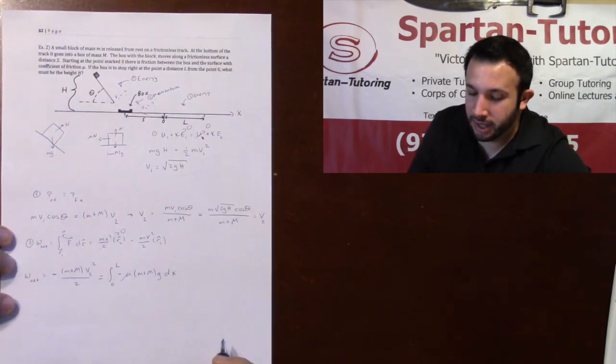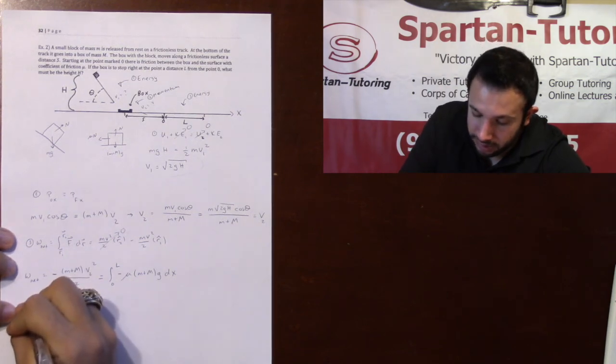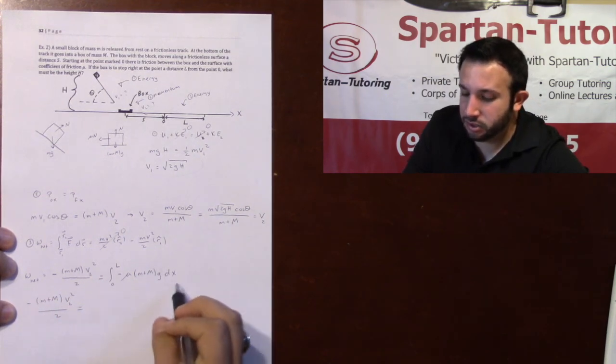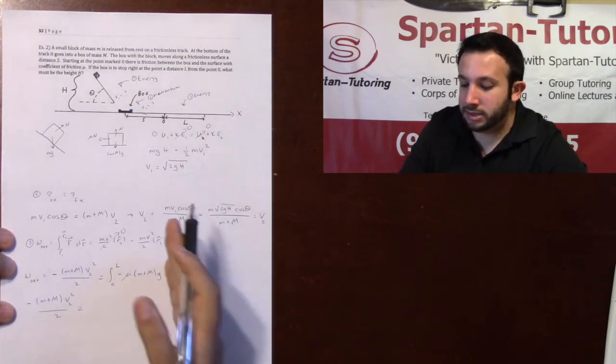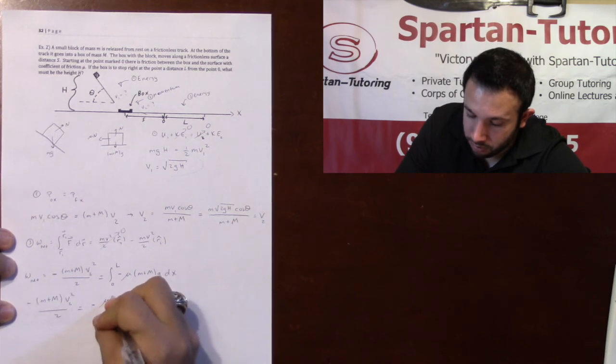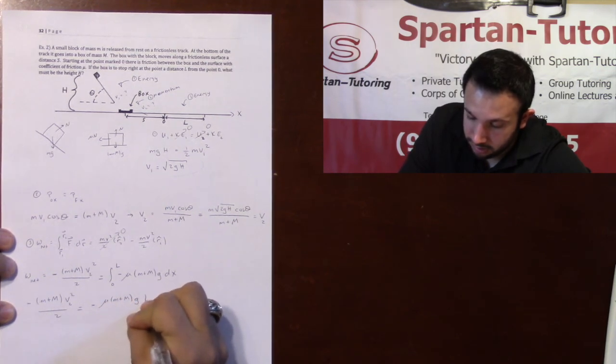And integrating this with respect to X, we would have a negative little m plus capital M V2 squared over 2 equals, and in this situation, all of this is a constant. So integrating that times X from 0 to L, will just be a negative mu, M plus capital M G L.